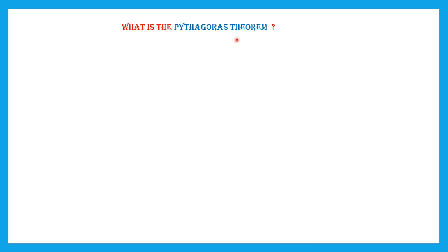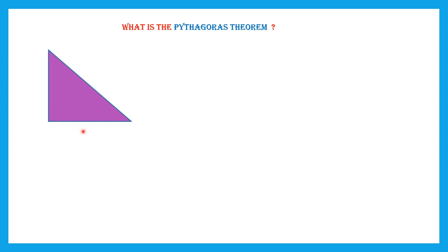What is the Pythagoras Theorem? Let's understand this with the help of a right angle triangle. So this is a right angle triangle — let's name it ABC.